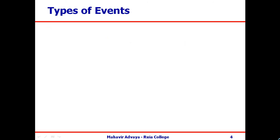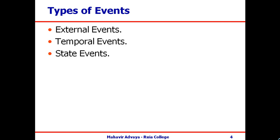There are different types of events: external events, temporal events, and state events. External events are triggered by some user or stakeholder outside the system — for example, a student requesting a mark sheet, railway concession, or bona fide certificate. These events force the system to do some processing. In a banking system, examples include a customer withdrawing an amount, depositing an amount, taking a loan, or paying an EMI.